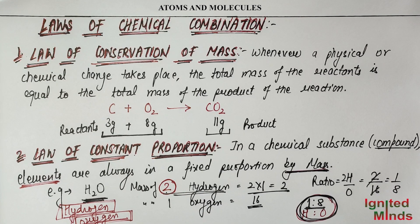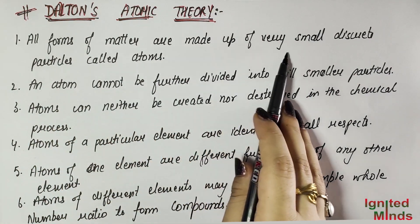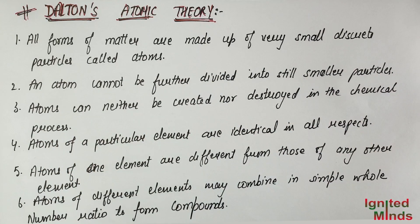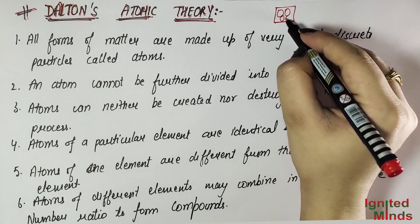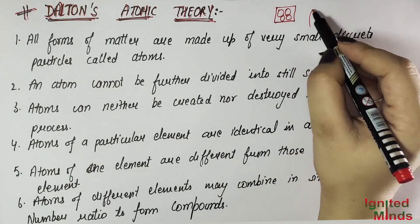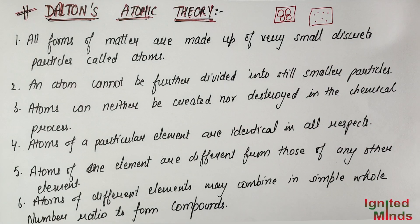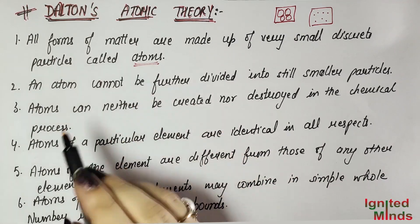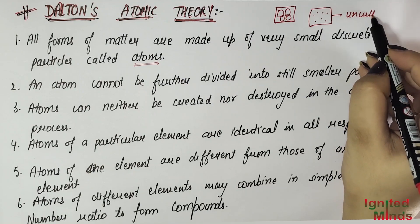Now let's study Dalton's Atomic Theory. It has six postulates. The first postulate is: all forms of matter are made up of very small discrete particles called atoms. As we discussed in the first video about atoms — matter is made of particles, and if we zoom in more and more, we reach a stage where we cannot zoom further. What we get there are atoms — the smallest particles that are uncuttable. So matter is made of very small atoms.